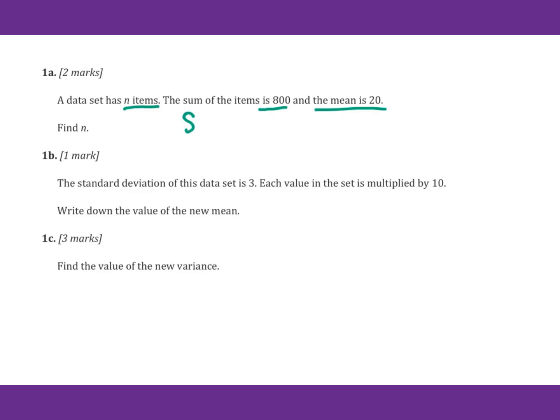We know that 800 divided by n equals 20. Therefore, n equals 800 over 20 equals 40.